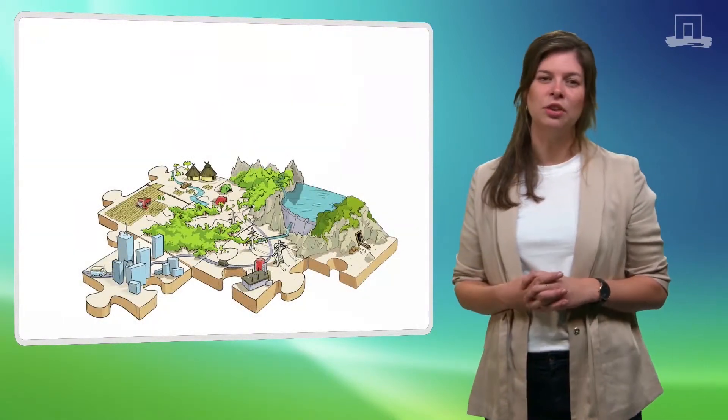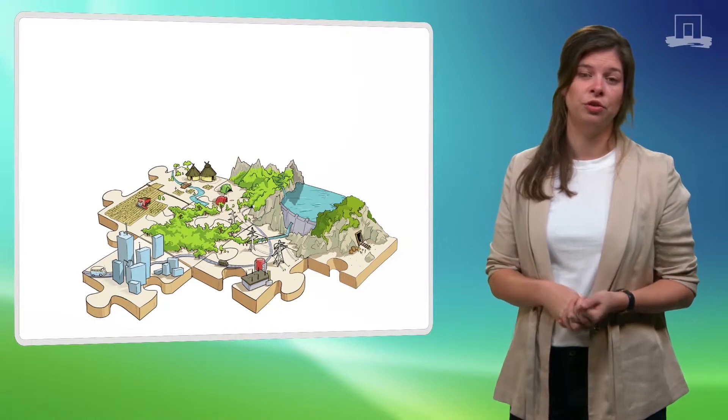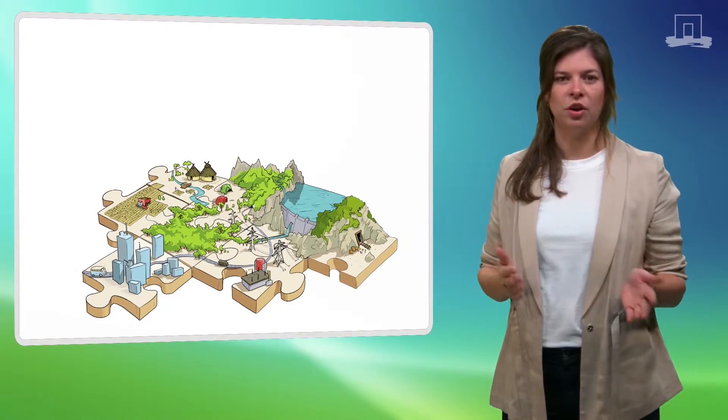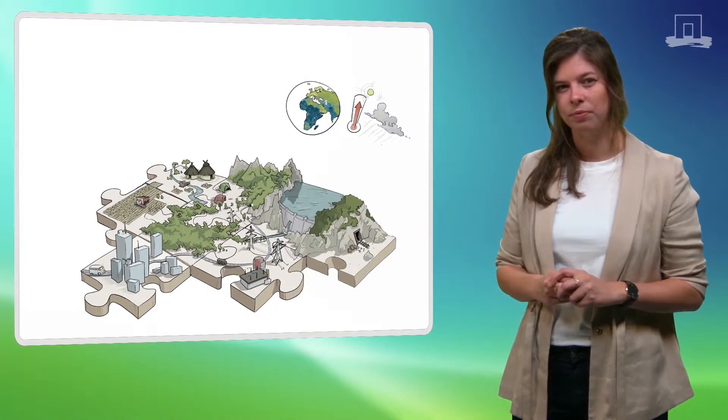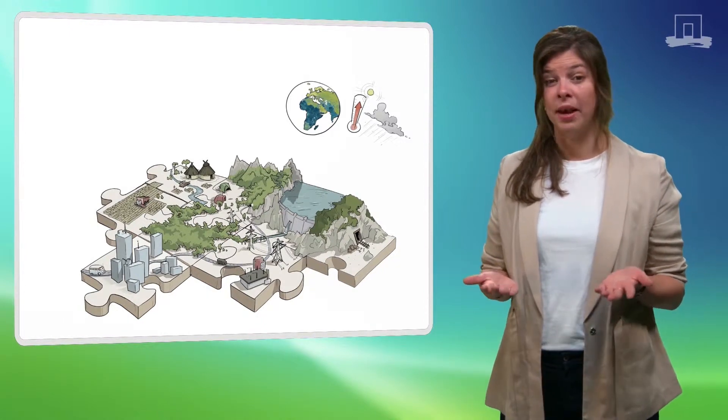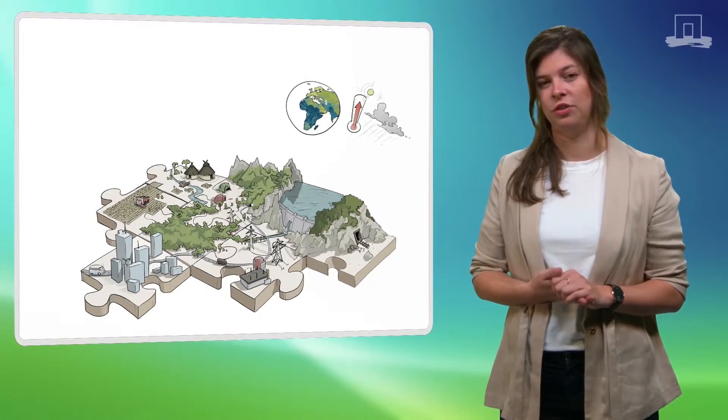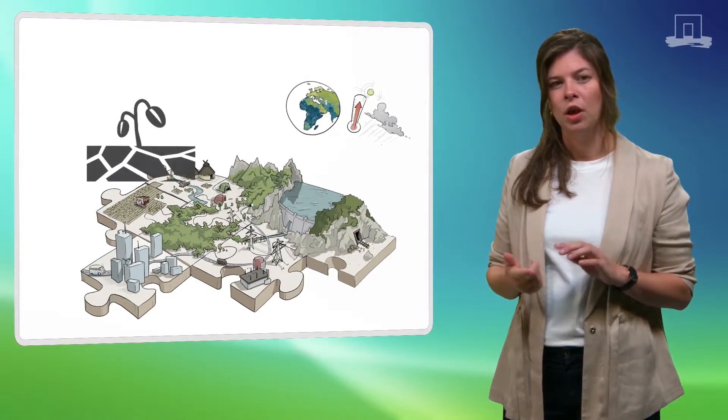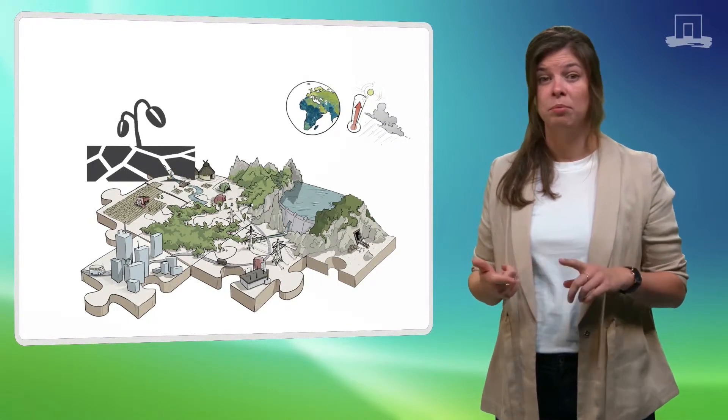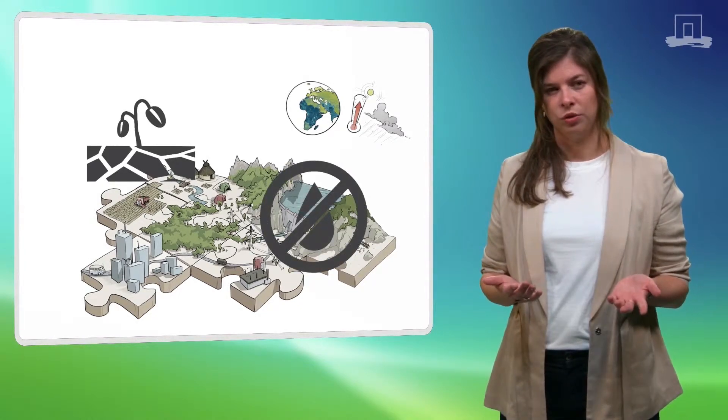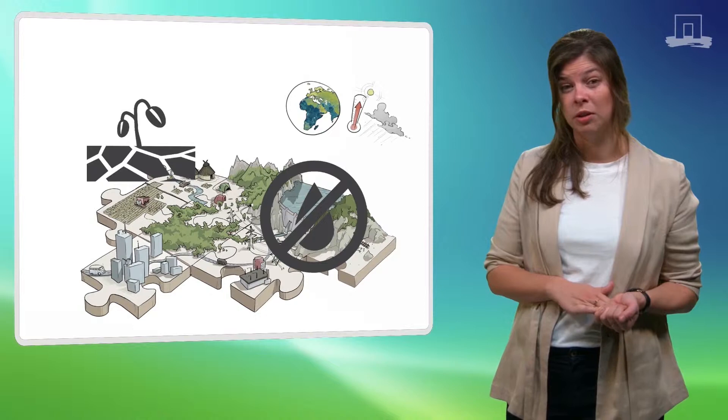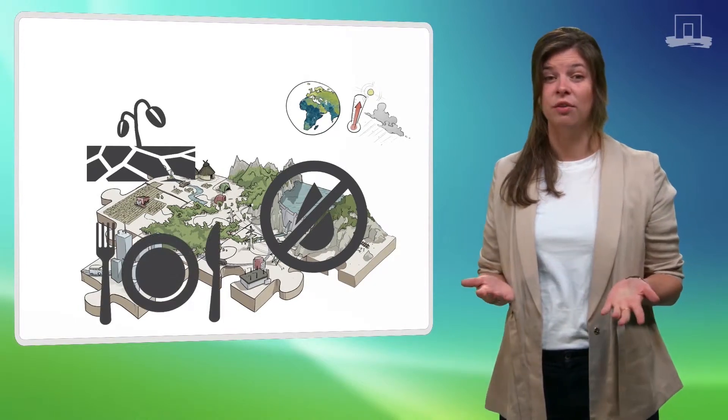This image illustrates how landscapes are multifunctional and that all functions are interconnected. Let's take the example of climate change. This can have severe impacts on multiple specific functions in your landscape. So prolonged droughts may result in harvest failure, declining fresh water resources affecting communities and animals, and eventually food insecurity.